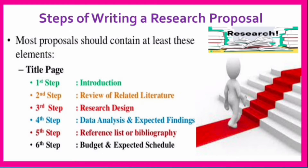Different researchers use different steps for writing a research proposal, but most proposals should contain at least these elements. First, the title of your project — that should be a clear indicator of the objective of your project, and keep the title concise and to the point. The steps include: introduction, review of related literature, research design, data analysis and expected findings, reference list or bibliography, and finally budget and expected schedule.